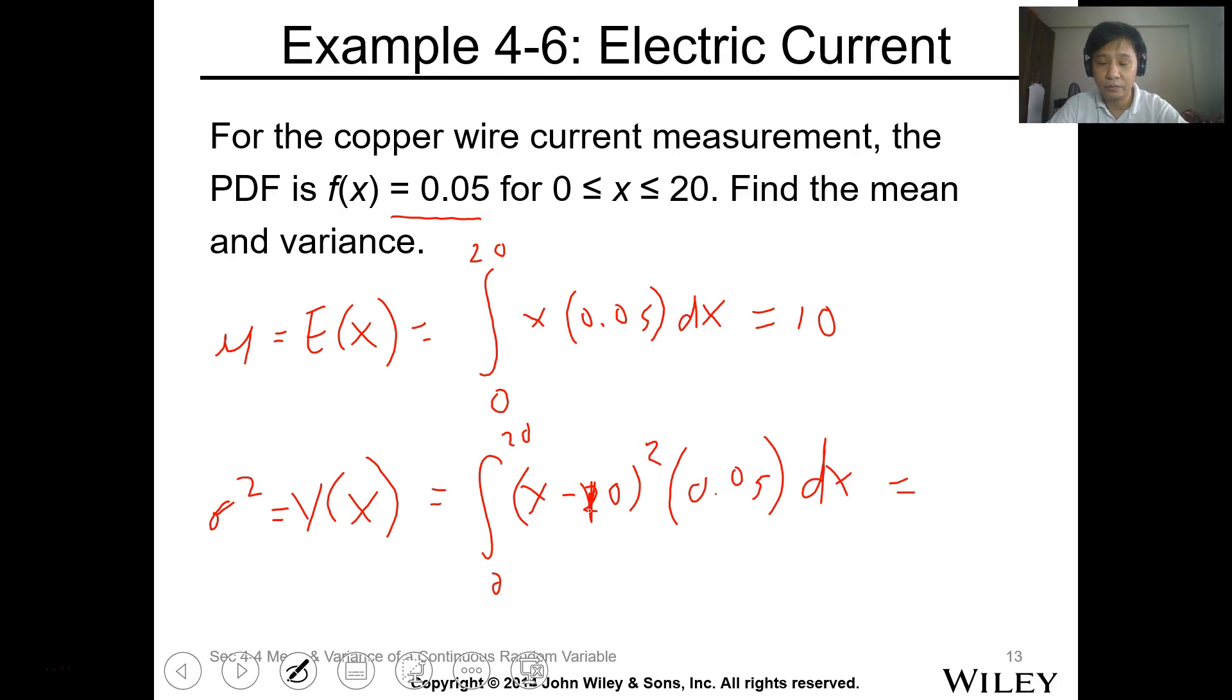Times 0.05. So para tama, lagyan nyo na lang ng parentheses from 0 to 20. So yung integration para makita nyo. So ito siya. Integration from 0 to 20 X minus 10 squared times 0.05.